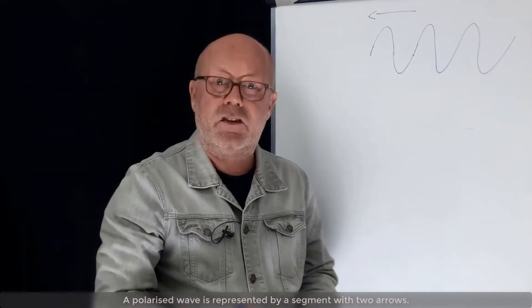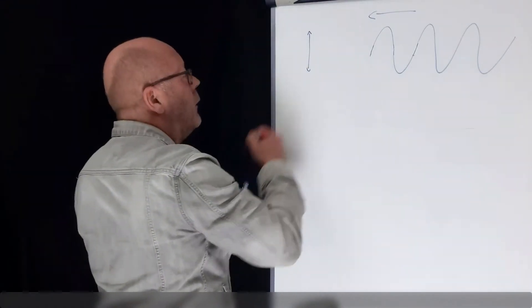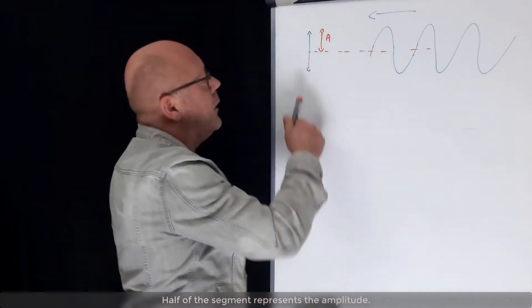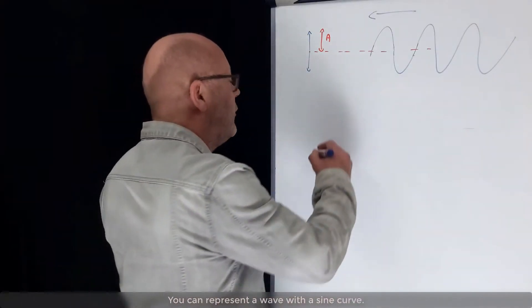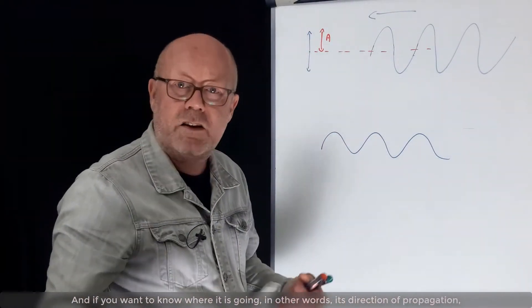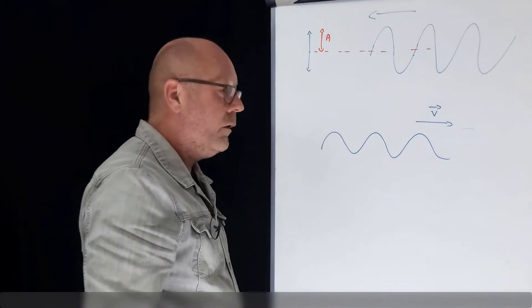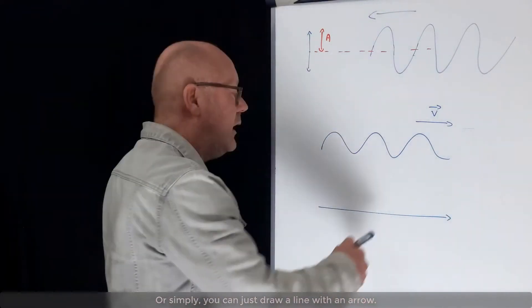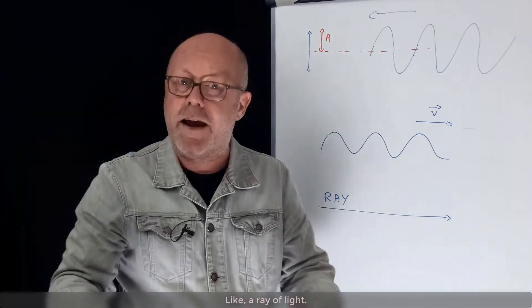A polarized wave is represented by a segment with two arrows. You can draw an axis like this. And you see half of the segment is actually the amplitude. The two arrows represent the oscillation. You can represent a wave with the sine curve, and if you want to know where it's going, in other words its direction of propagation, you can associate with it a velocity vector like this. Or, more simply, you can just draw a line with an arrow. This representation is called a ray. Like a ray of light.